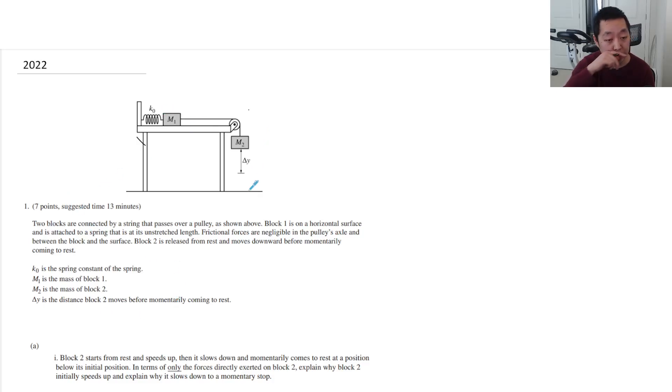We have these two blocks connected by a string and block one is on a horizontal surface attached to a spring that's unstretched length. Frictional forces are negligible in the policy axle between the block and the surface. No friction. Block two is released from rest and moves downward momentarily before coming to rest.